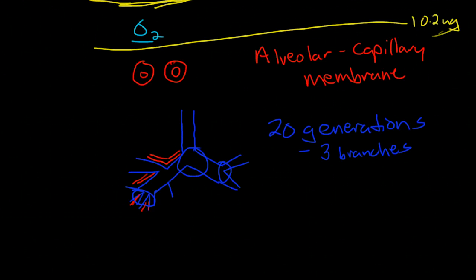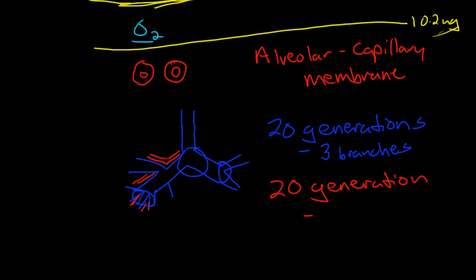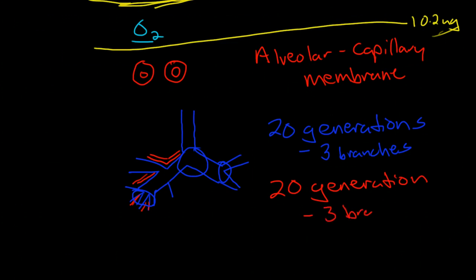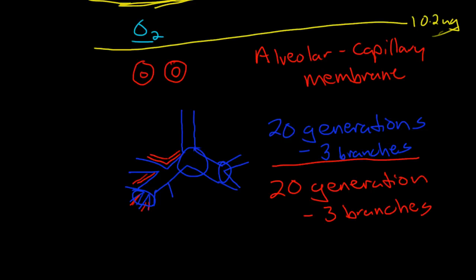Lo and behold, the arterial system exactly matches this: 20 generations, about three branches per generation. So the vascular system of the lungs and the pulmonary system of the lungs develop in exactly the same level, the exact same form of development, with the exact same branches going the exact same directions.